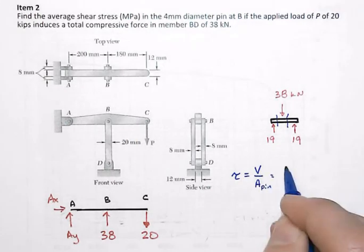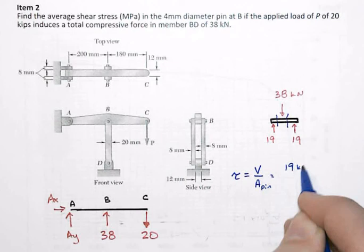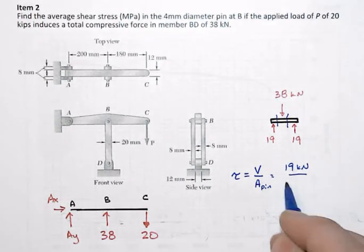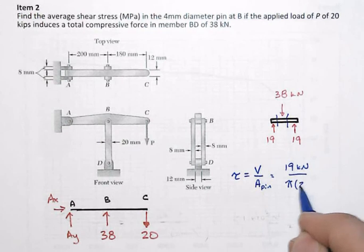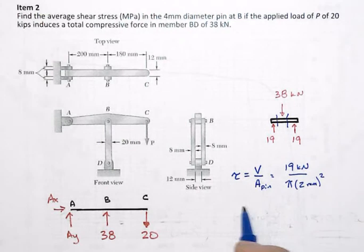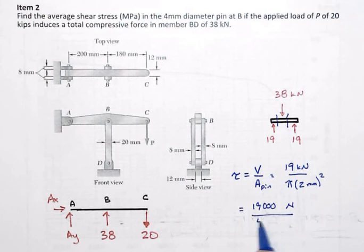That shear force now being 19 kilonewtons divided by pi times our radius of 2 millimeters squared. And that will be the same thing as 19,000 newtons over 4 pi millimeters squared.